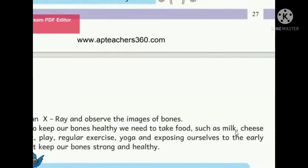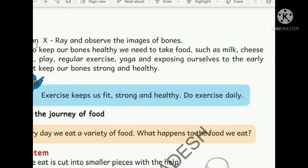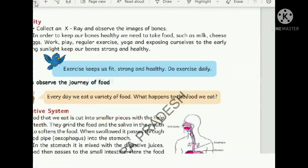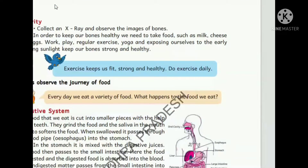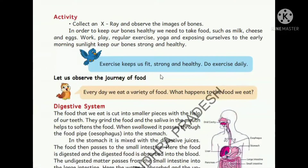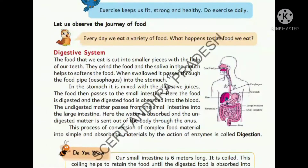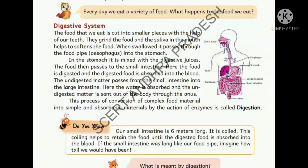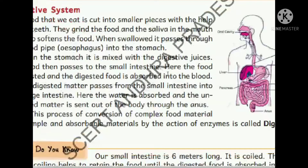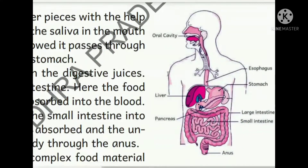If we have no skeleton in our body, what would happen? You can see a skeletal system clearly through an X-ray. Do exercise to strengthen your body daily. That is the best way to get a good skeletal system.